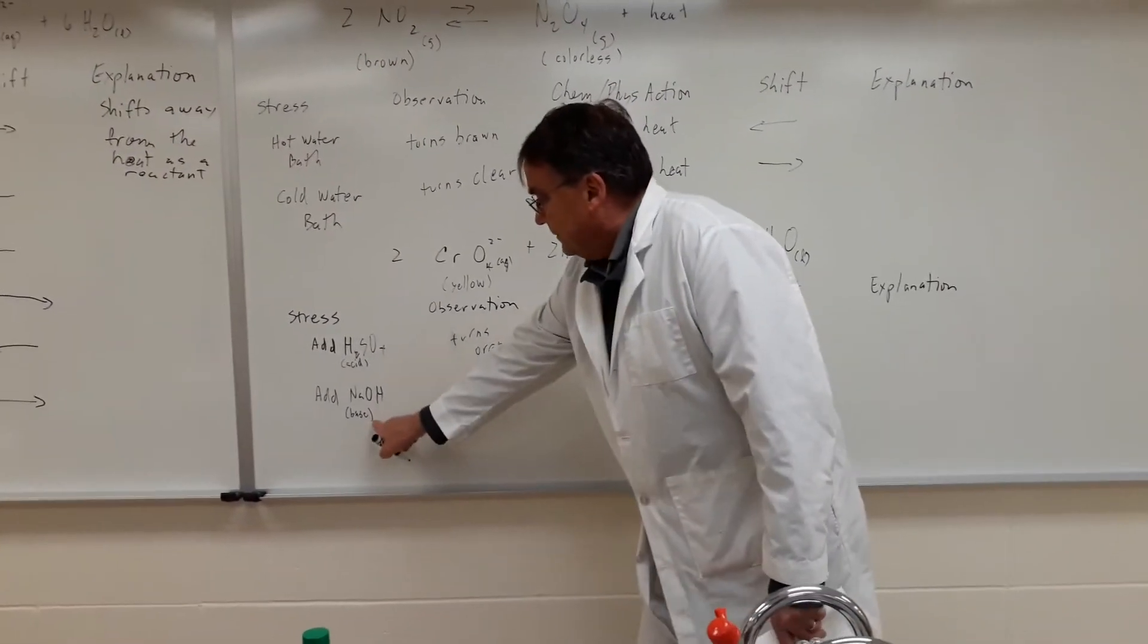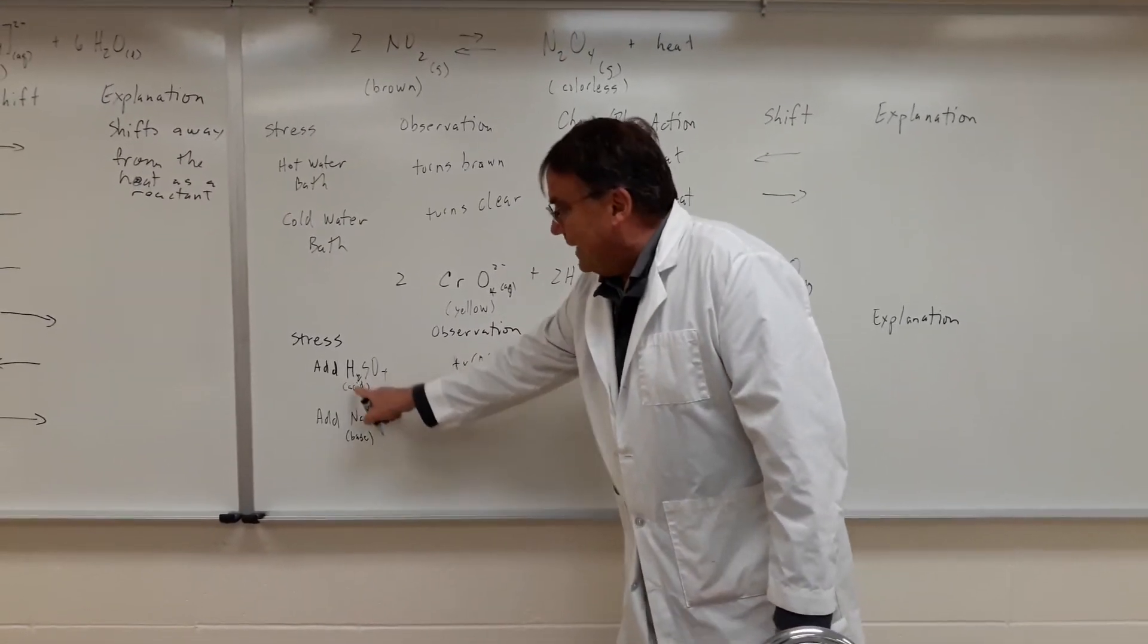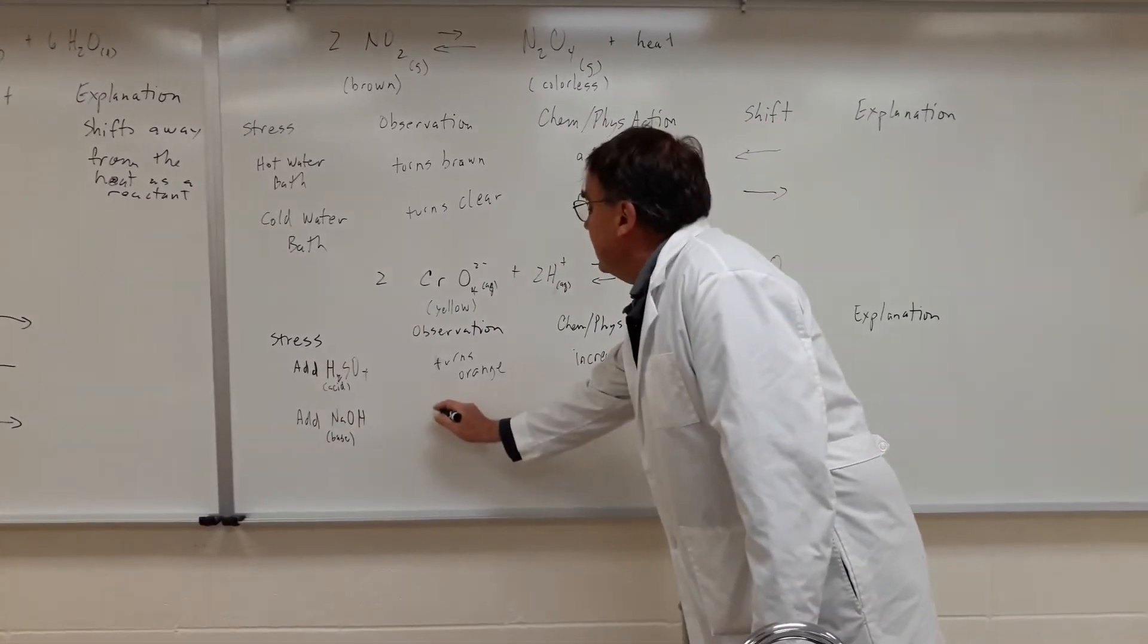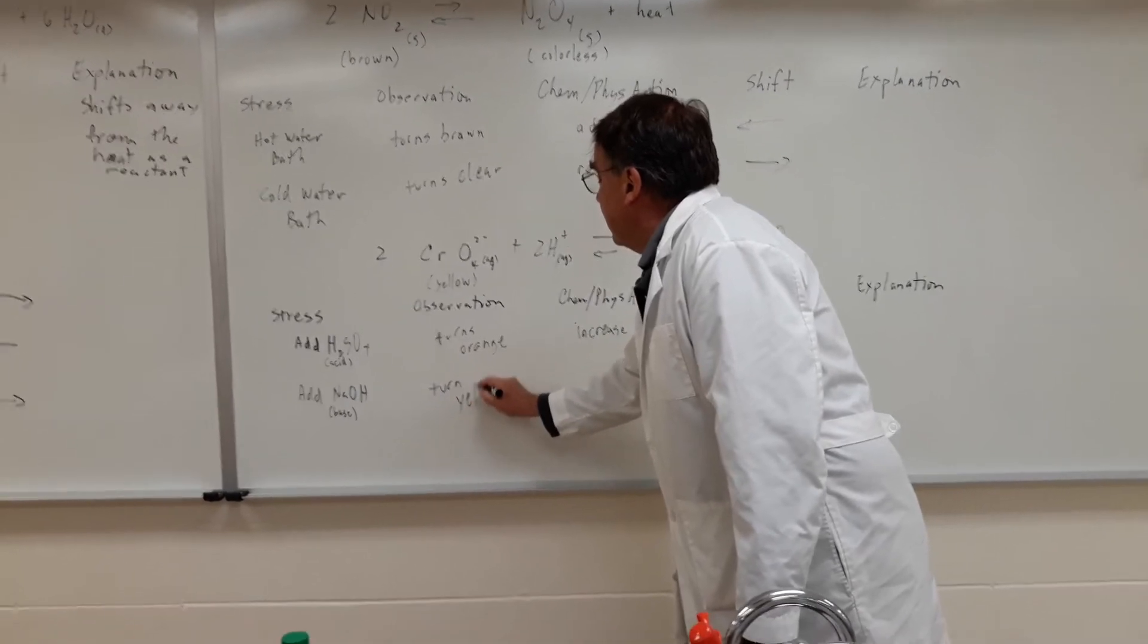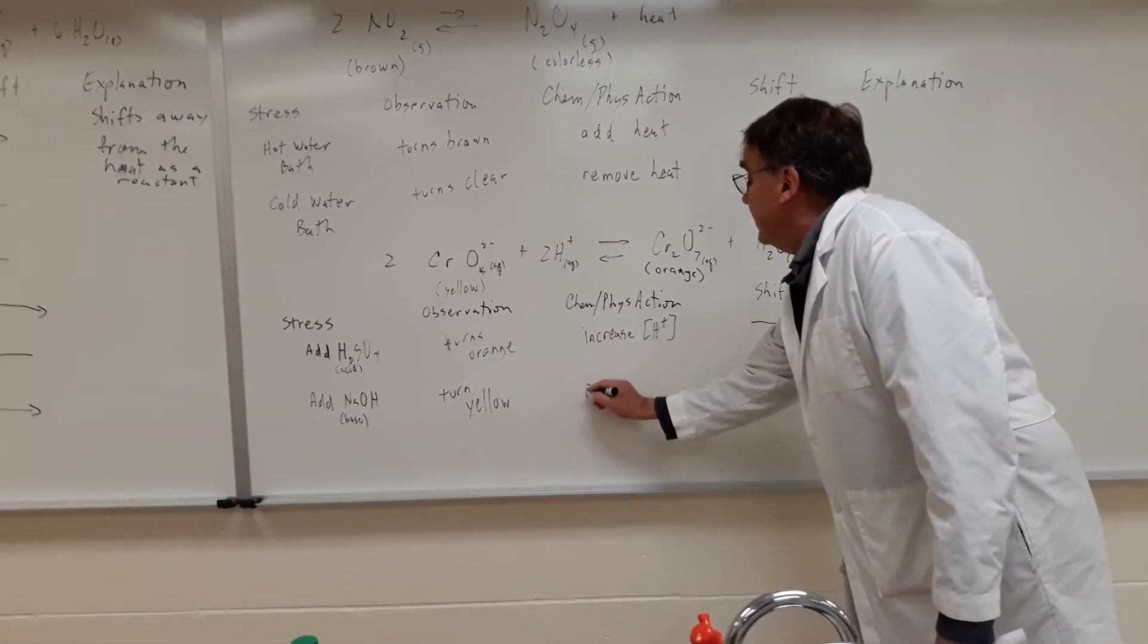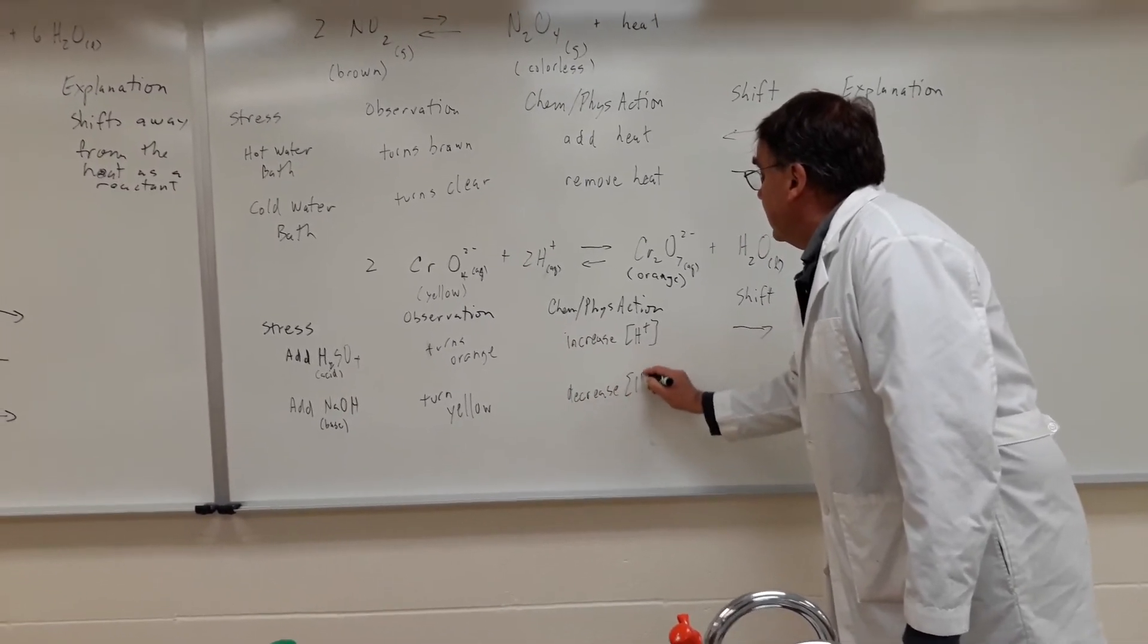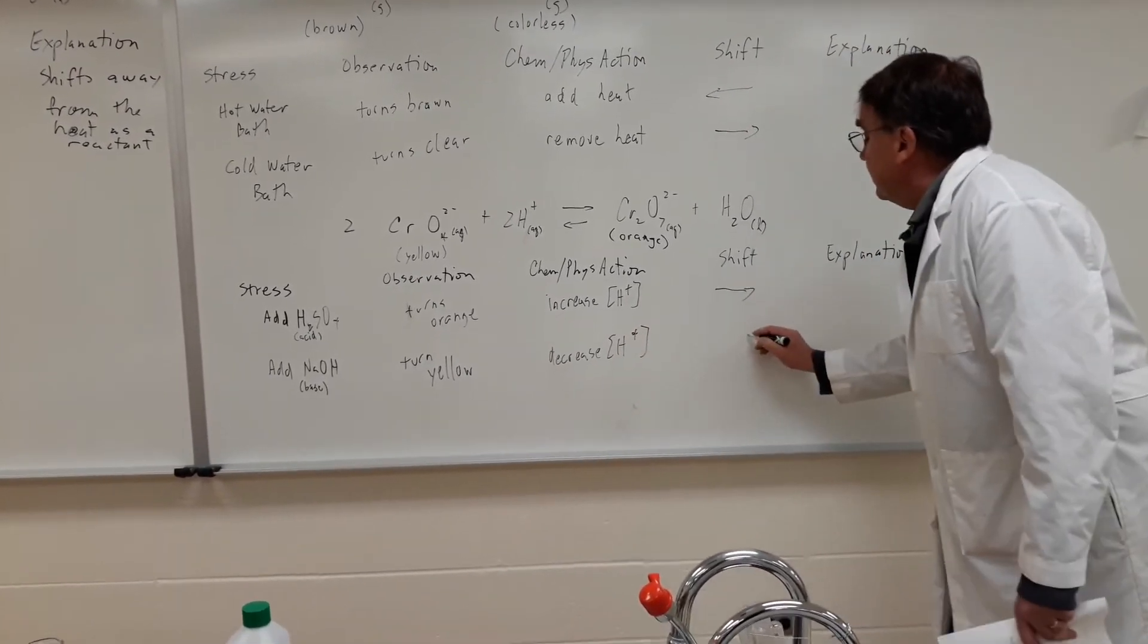And over here, sodium hydroxide is a base. As we'll find out in the next unit, when you add a base to an acid, they neutralize each other. So the net effect, we saw it turn yellow. And the net effect was to decrease hydrogen ion. And the shift was this way. So you can explain those.